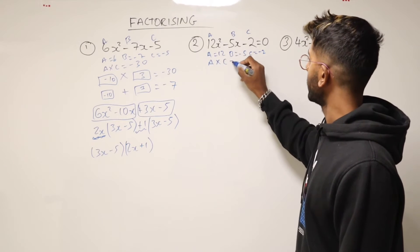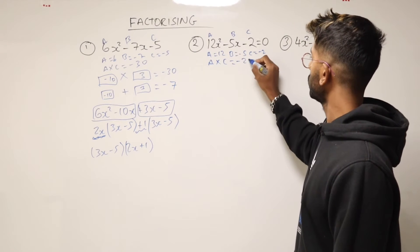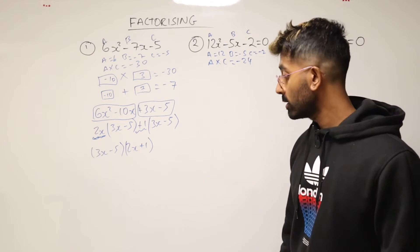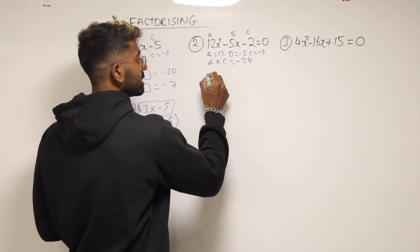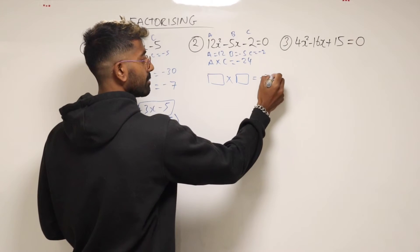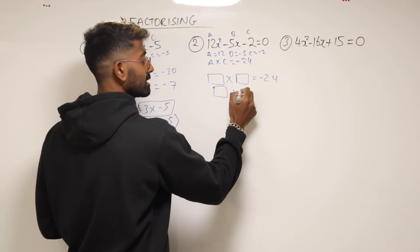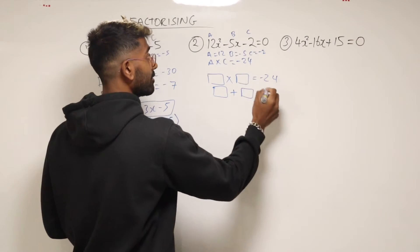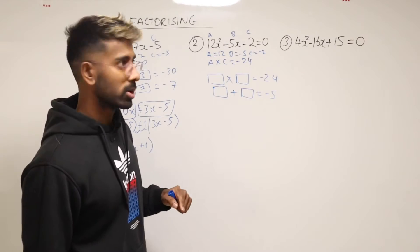Next thing, multiply a and c together. That's 12 times minus 2. That's minus 24. And so this time, what we need is two numbers that's going to times together to minus 24. And the same two numbers must add to minus 5, because that's what b was.